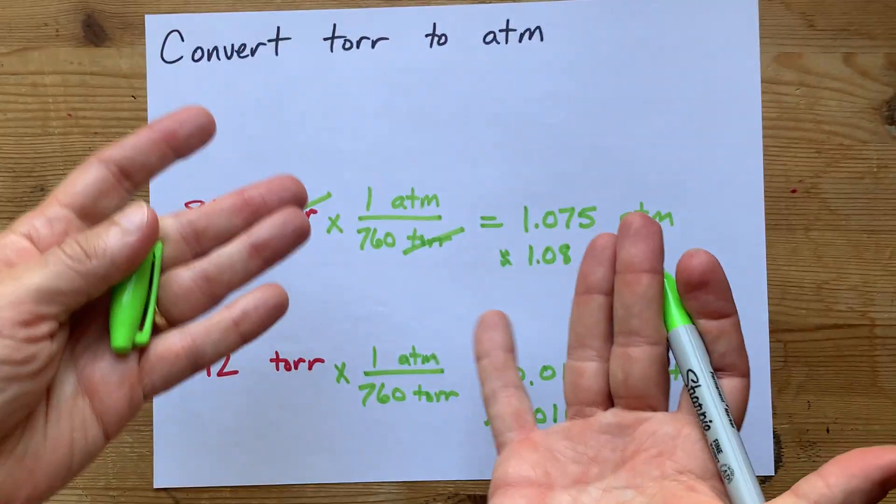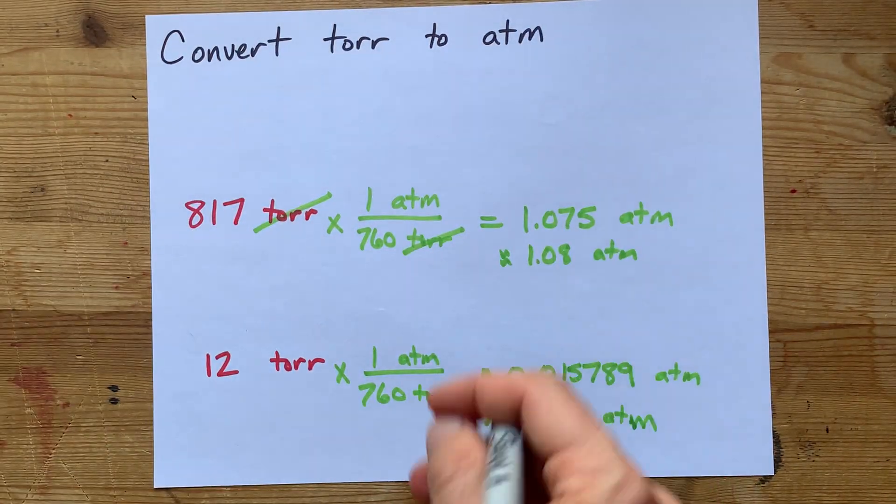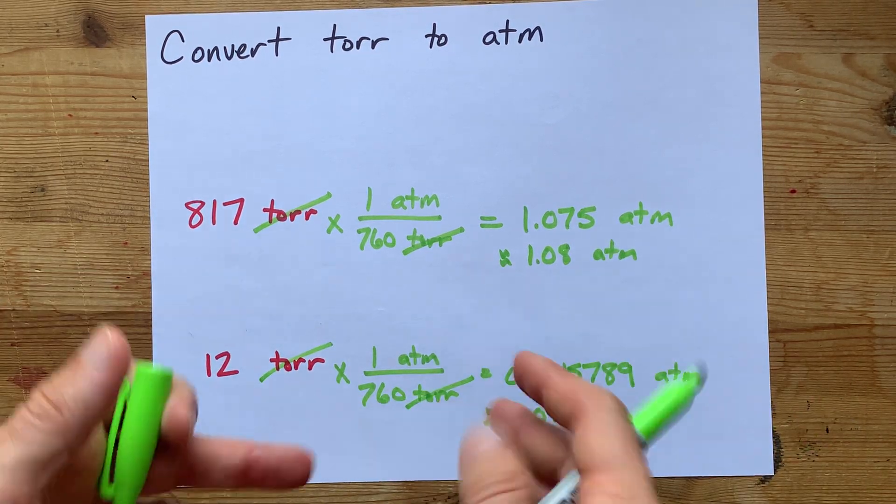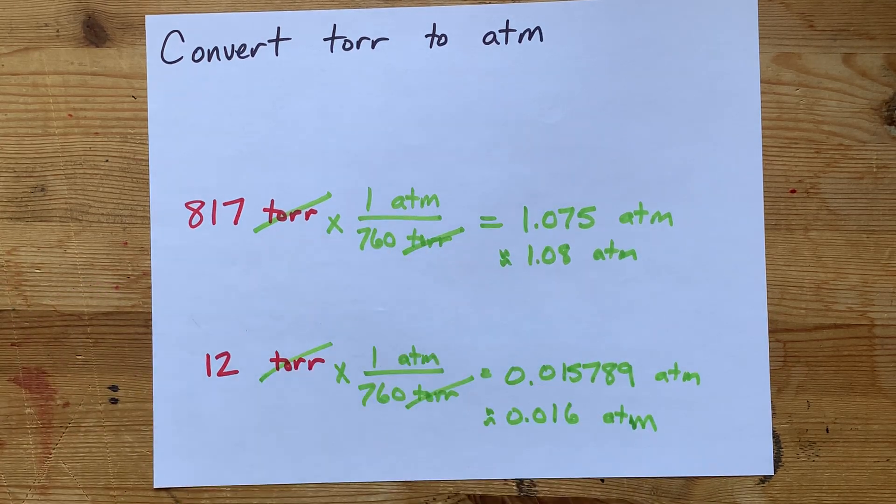Cool! Divide by 760 and you're done. If you want to show the unit analysis, multiply by 1 over 760, but that's the same thing. Nice.